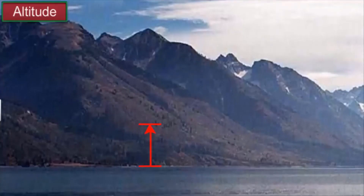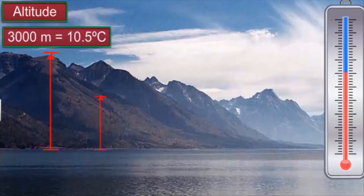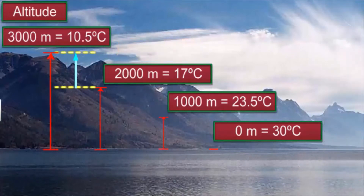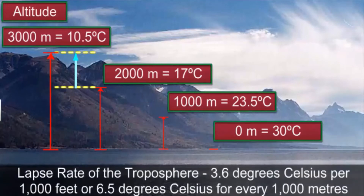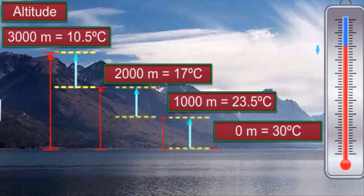Altitude is another factor that controls the climate of a place. The higher one travels into the troposphere, the lower the temperature becomes. The rate at which the temperature drops is known as the lapse rate. On an average, the lapse rate of the troposphere is 3.6 degrees Celsius per 1000 feet, or 6.5 degrees Celsius for every 1000 meters. This means that for every 1000 feet that one moves into the atmosphere, the average temperature drops by 3.6 degrees.